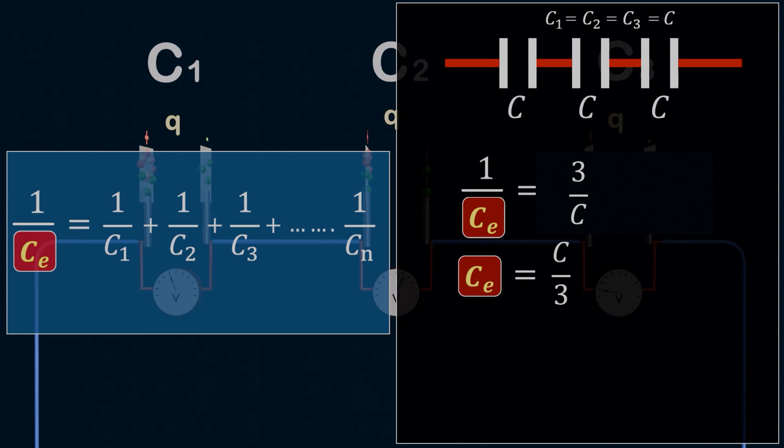Also, when all capacitors in the series have the same capacitance, we can use a simplified formula. If n is the number of capacitors and each has capacitance C, then CE equals C by n. For example, if we connect 10 capacitors, each of 5 microfarads in series, then CE equals 5 by 10, which gives 0.5 microfarad.